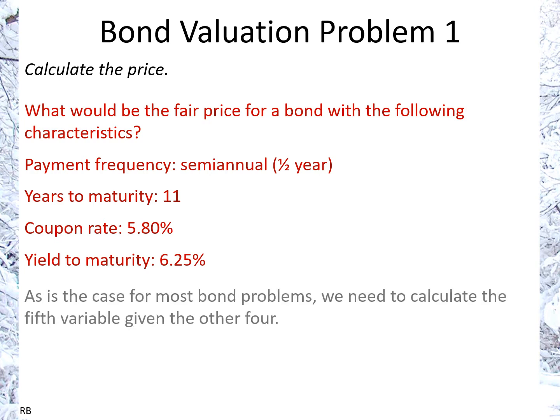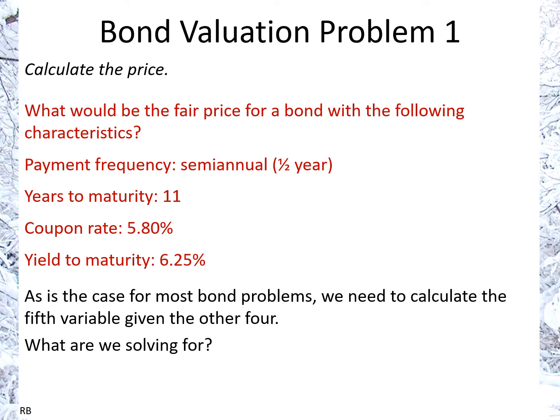This is an example of a typical bond problem where we need to calculate the fifth variable given the other four. So what are we looking for here? We're solving for the fair price of the bond, so on our calculator that will be the present value, the PV button.